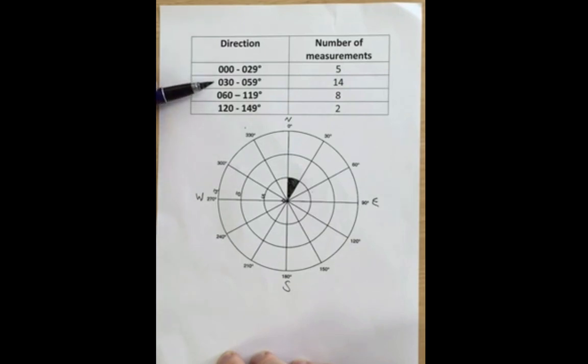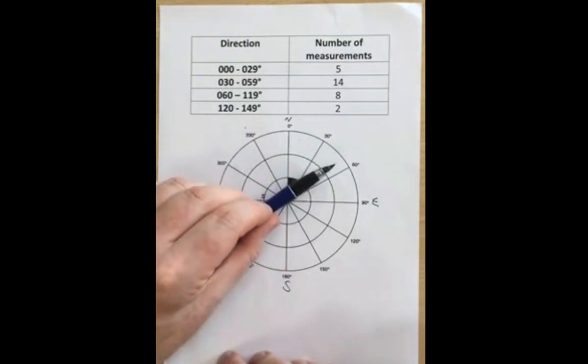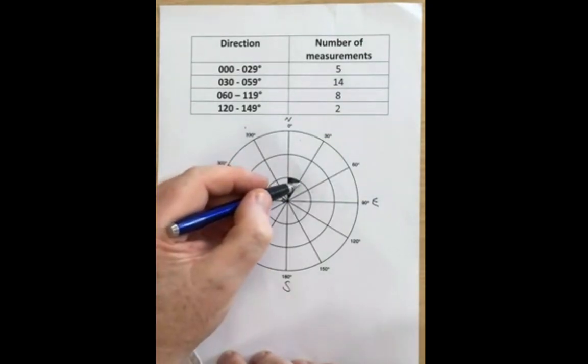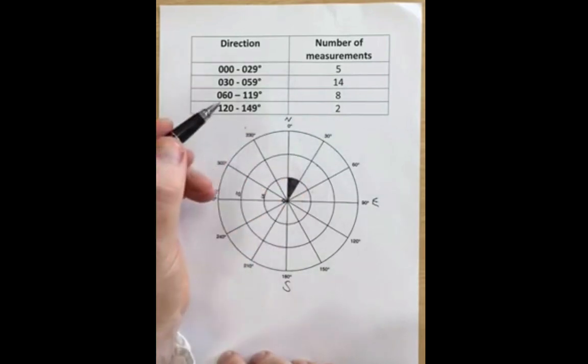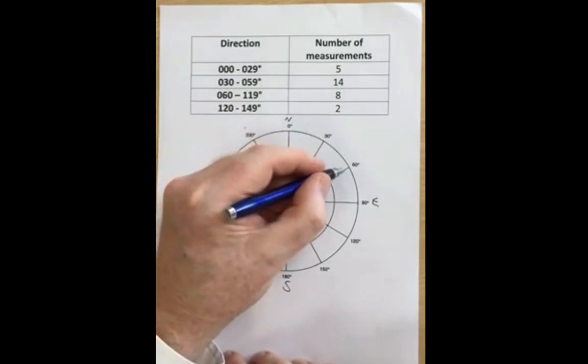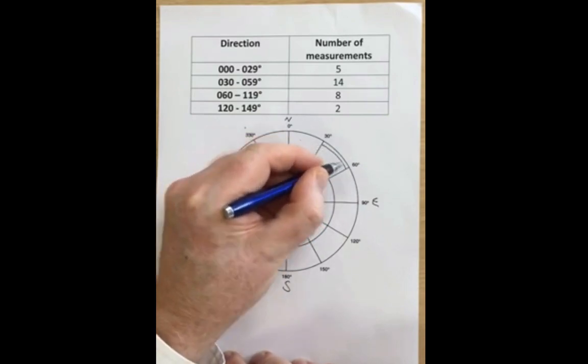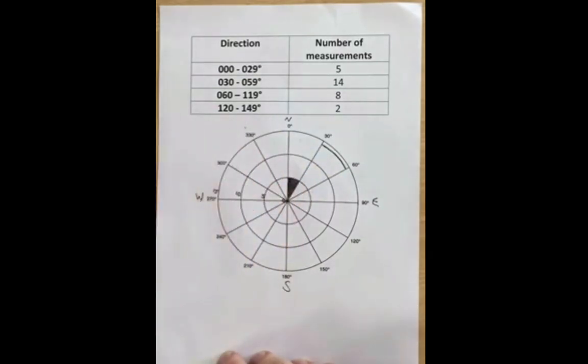The next measurement from 30 to 59 degrees is 14. So that represents this particular section of our rose diagram. We've got five, 10 and 15 values. So we know that ours is 14. So we come in from the edge like that to represent our 14.